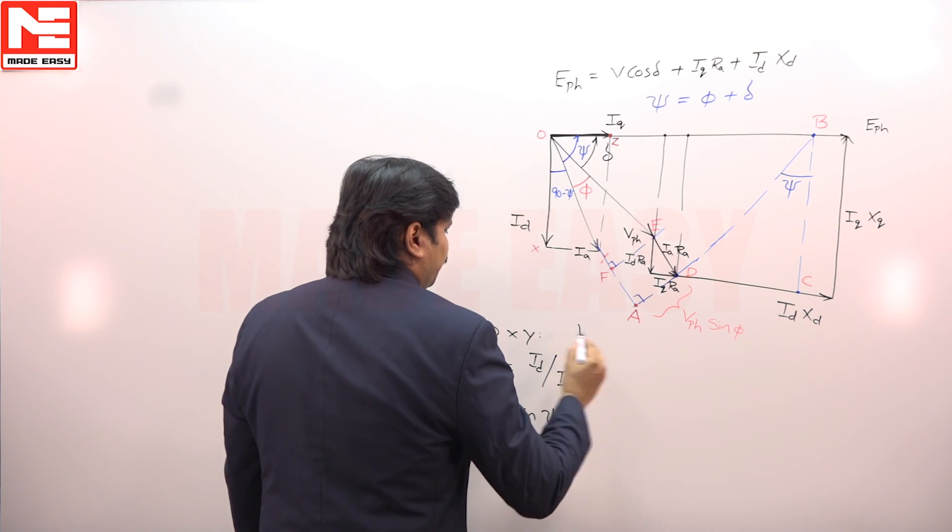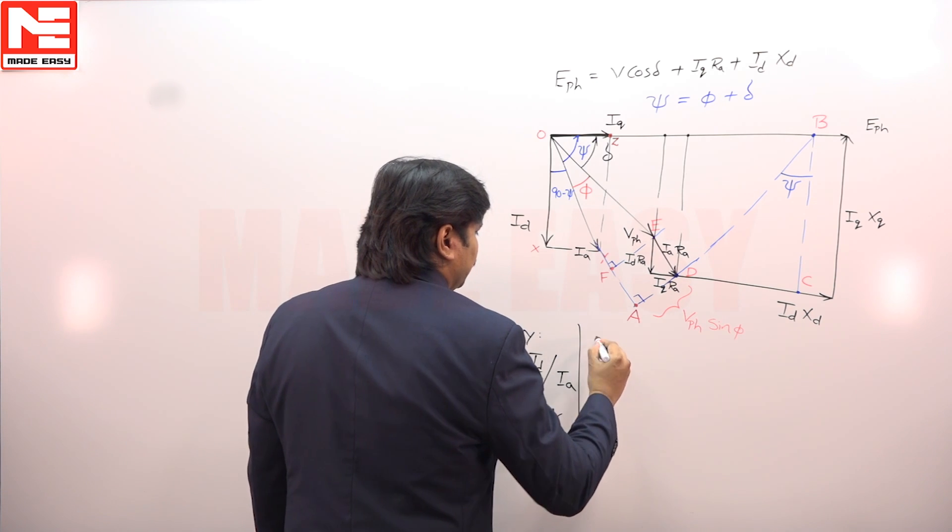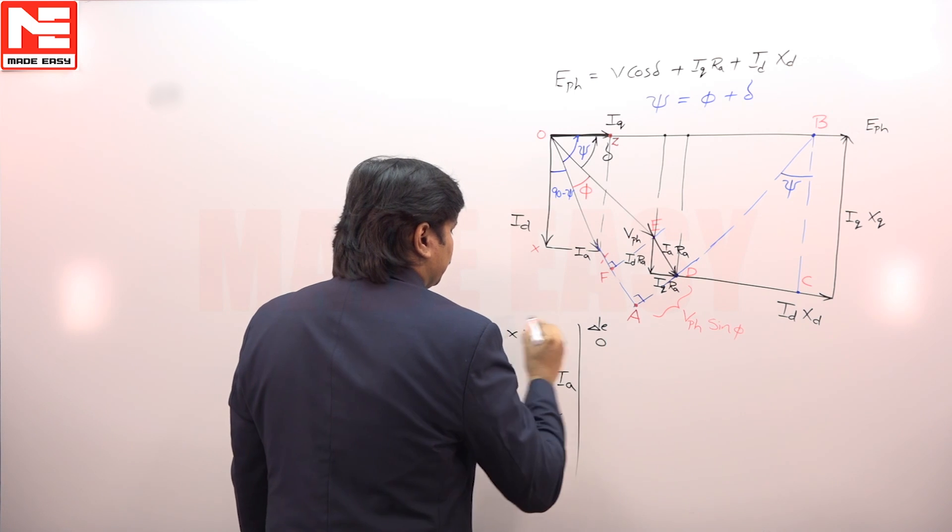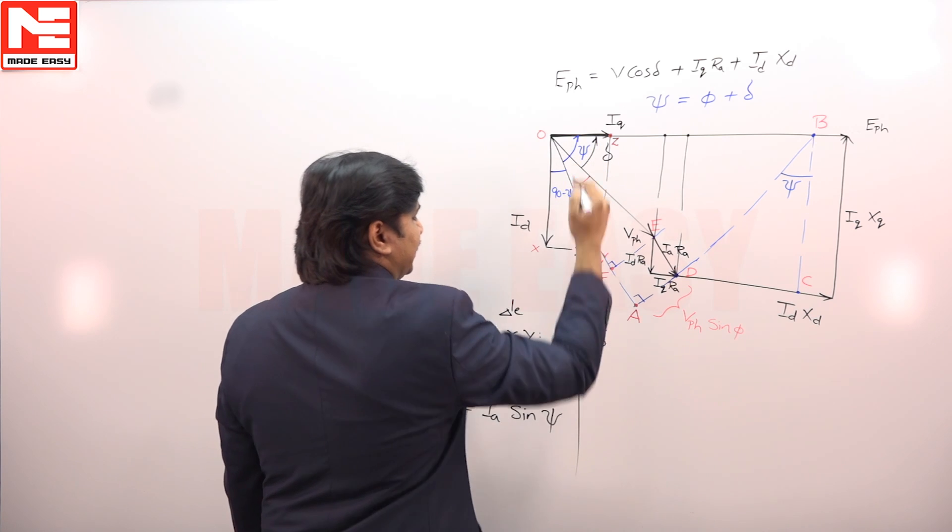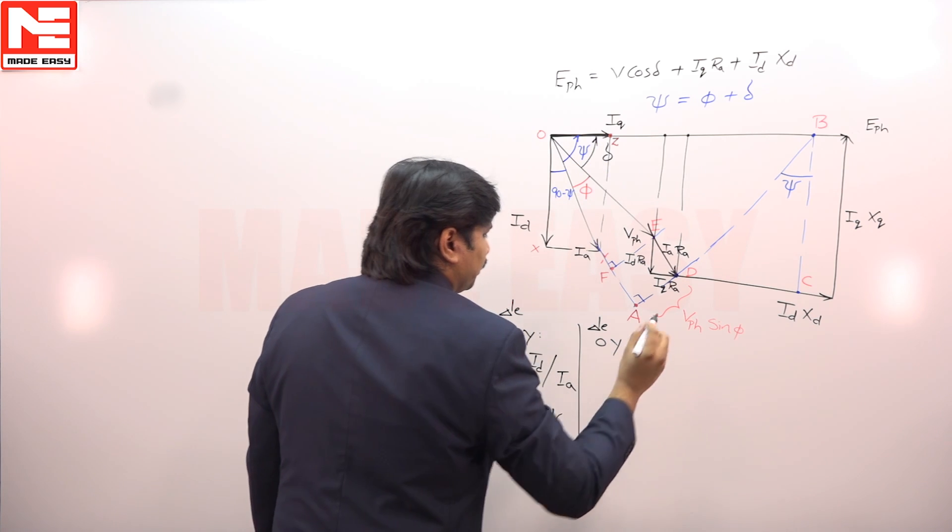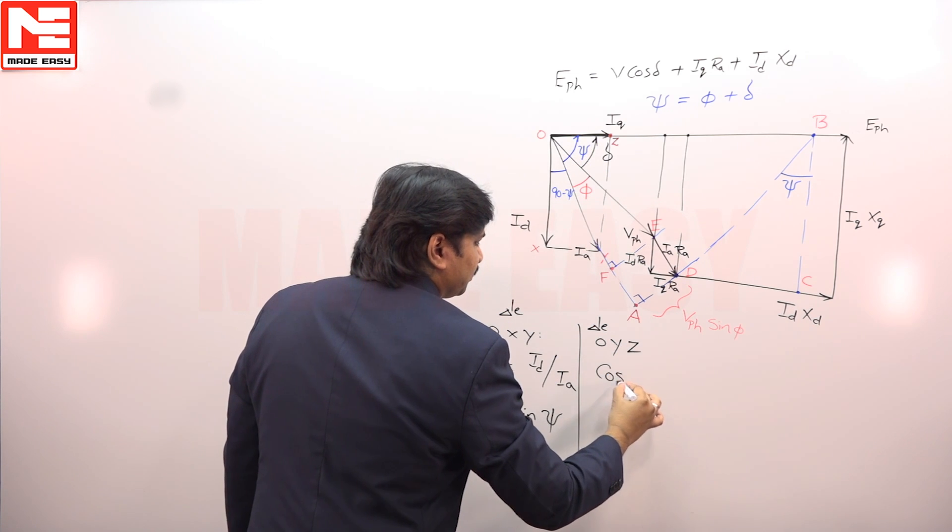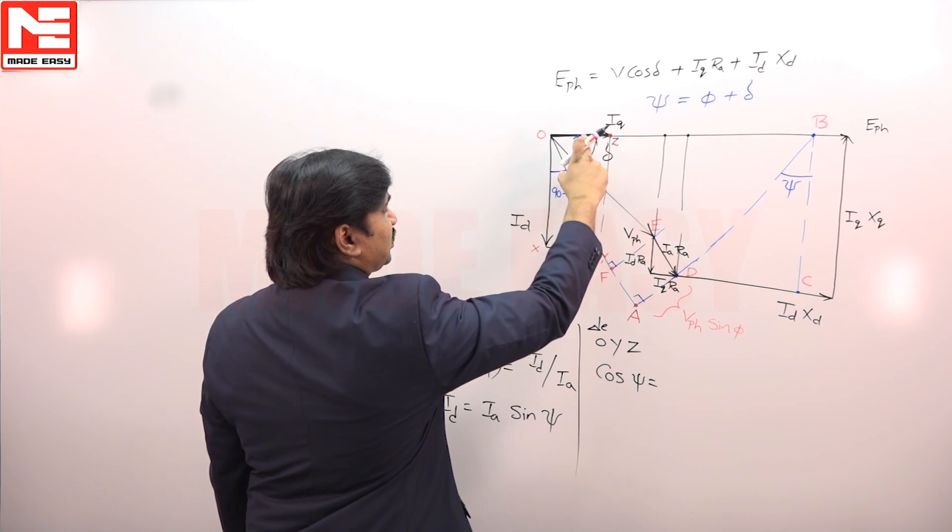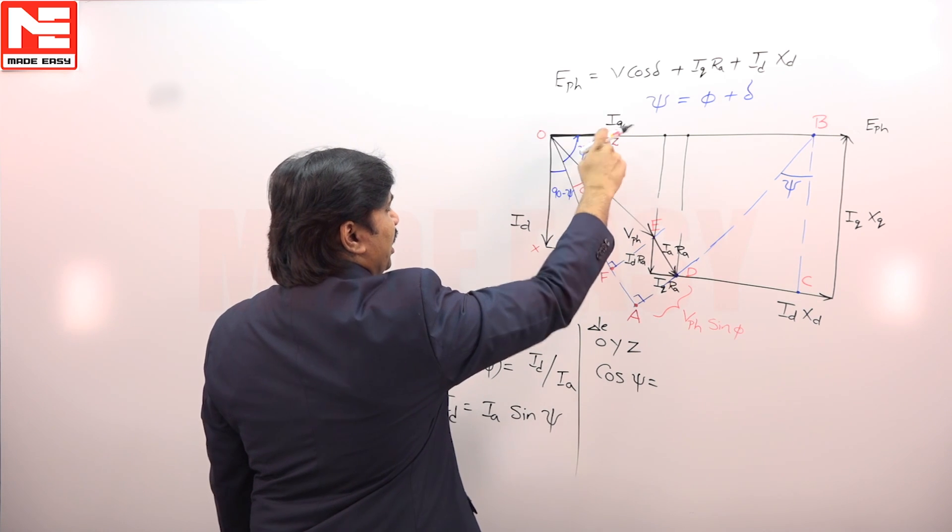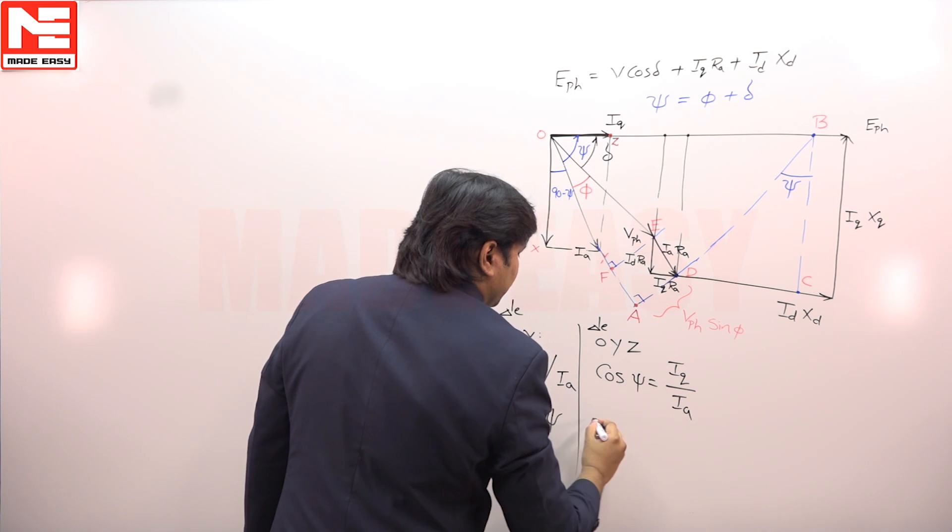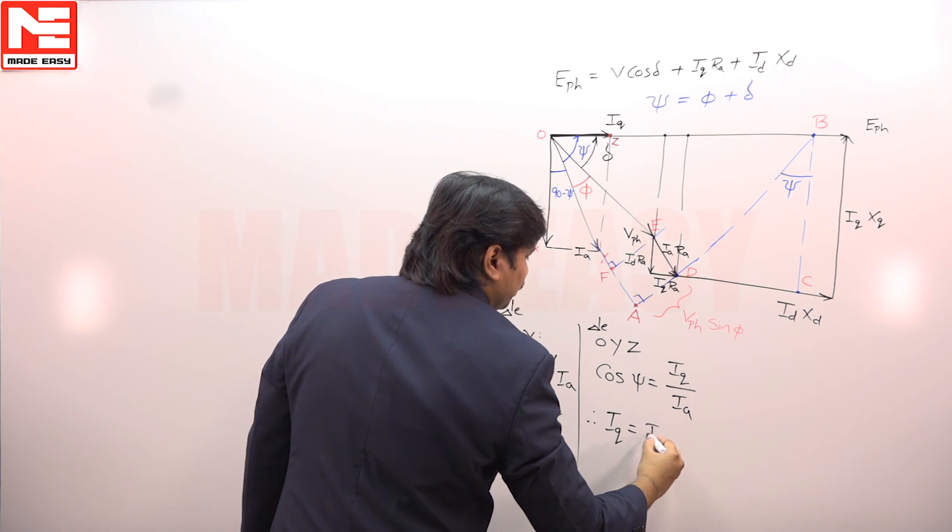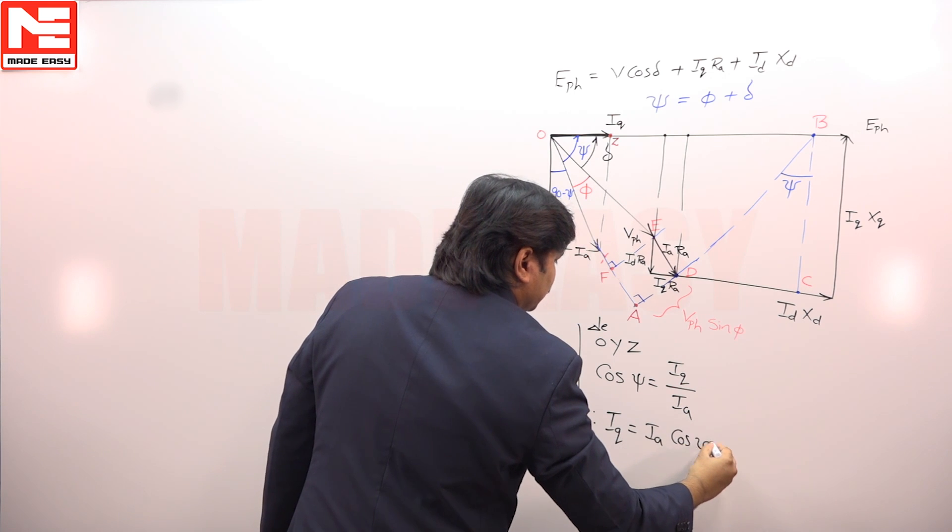Next, from triangle O, Y, Z, cos psi is equal to IQ by IA. Therefore, IQ is equal to IA cos psi.